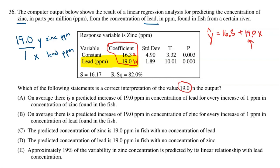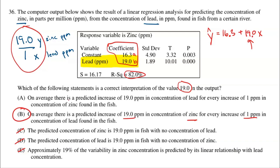Choices C and D are wrong — those actually interpret 19 as the Y-intercept, but the Y-intercept is 16.3. Choice E tries to turn it into a percentage related to the coefficient of determination R-squared — 82% of the variability in zinc concentration would be the R-squared interpretation, but that's not what the question asks. A and B both talk about slope correctly, but one has it reversed. The correct answer is B: we predict an increase of 19 for zinc for every one increase of lead. Create that fraction to make the best choice.